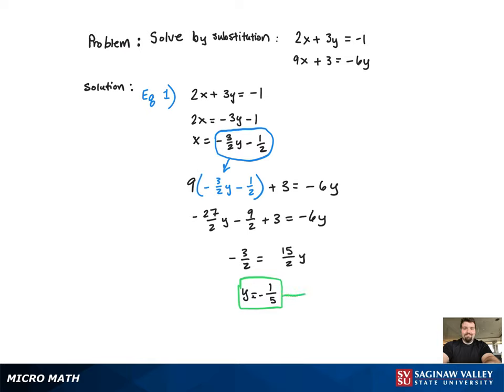Now I'm going to plug that back in and solve for x. And when I do that, I also get x equal to negative 1 fifth. So the ordered pair solution is going to be negative 1 fifth comma negative 1 fifth, and the graph will be provided.